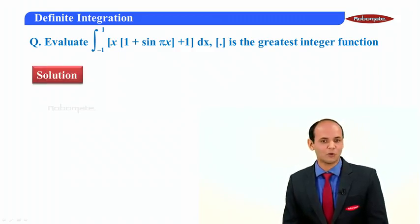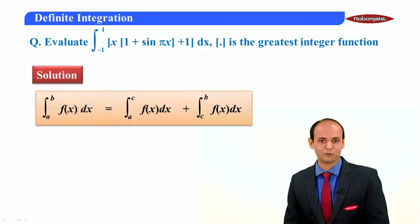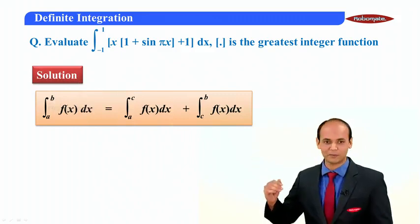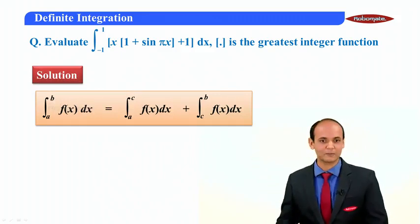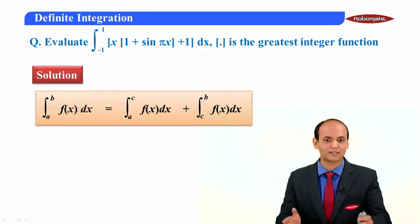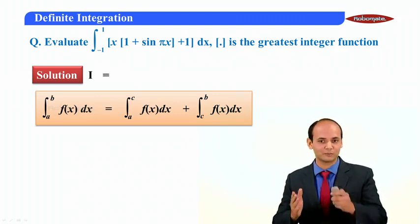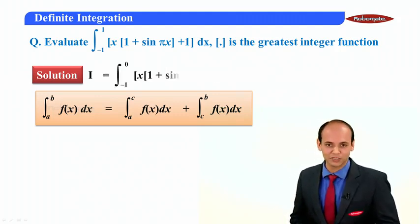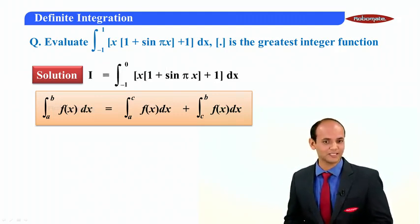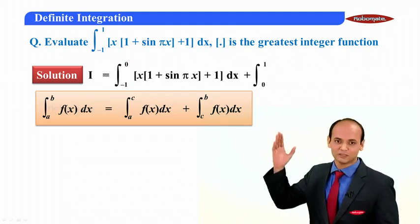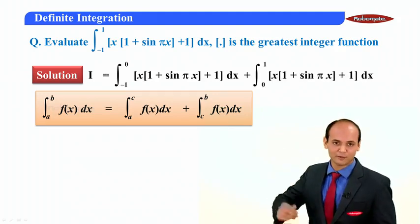In this example, we are going to use property number 3 — we will break this integral into two parts. The first integral is from minus 1 to 0 of f(x) dx, plus the integral from 0 to 1 of f(x) dx.